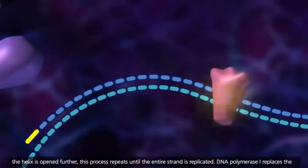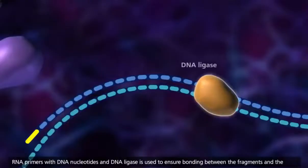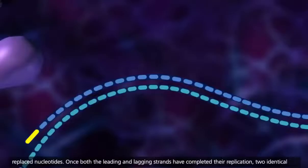DNA polymerase 1 replaces the RNA primers with DNA nucleotides, and DNA ligase is used to ensure bonding between the fragments and the replaced nucleotides.